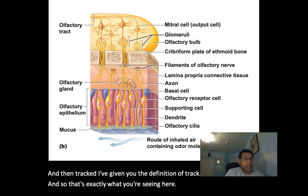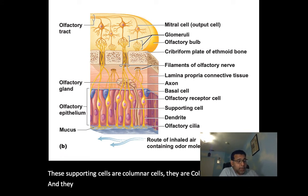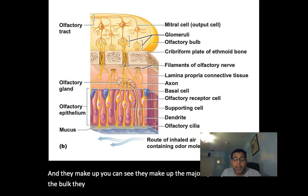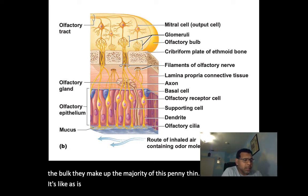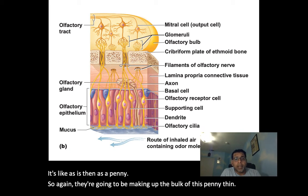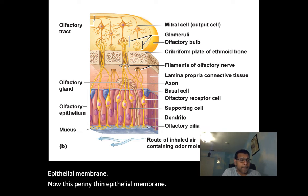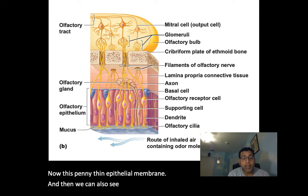We also have supporting cells here — columnar cells that make up the majority of this penny-thin epithelial membrane. We also have basal cells, which are dynamic stem cells.